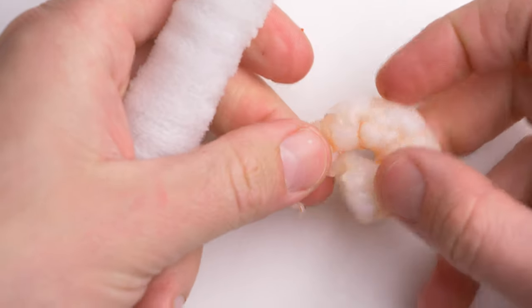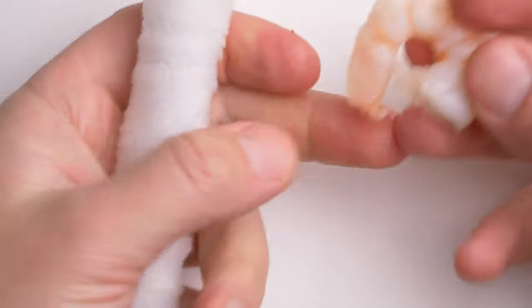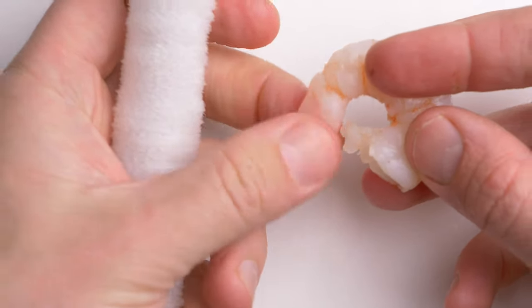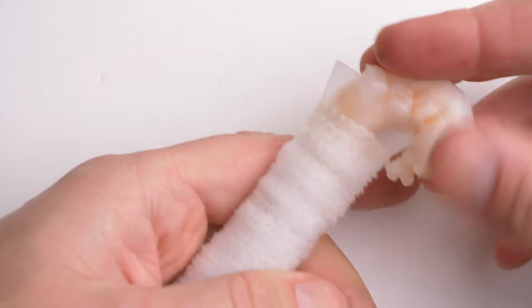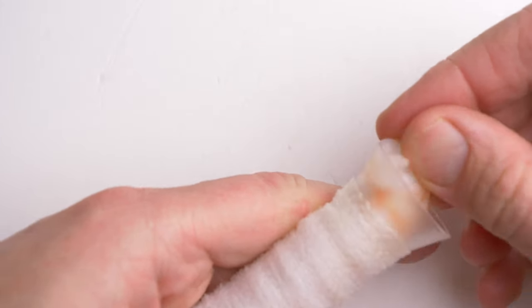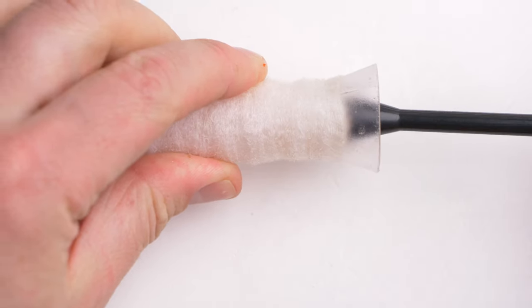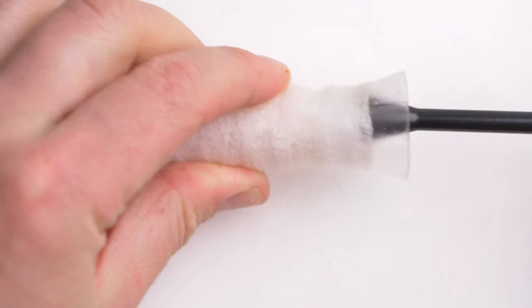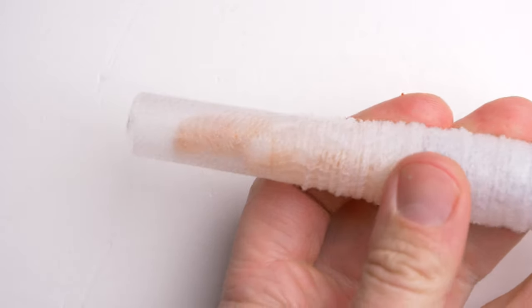You want to start putting the prawn into the tube with the thinner end, or starting with the thinner end. And then it gives the thicker end, or gives us the opportunity to use the thicker end, to plunge the bait through the tube.